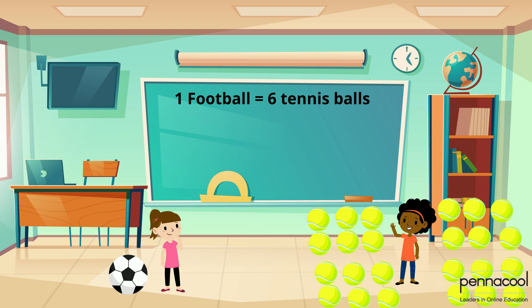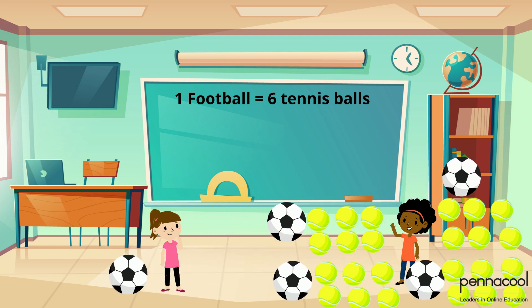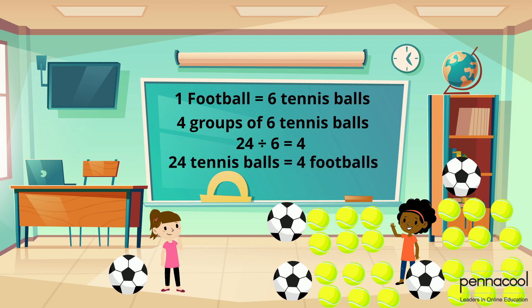To answer this question, Taylor knows she must determine how many groups of six fit into 24, given that she has 24 tennis balls. Each group of six represents one football. She can make four groups of six tennis balls from the 24 tennis balls. This means that 24 divided by six equals four — four footballs have the same mass as the 24 tennis balls.